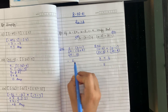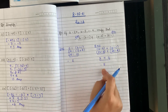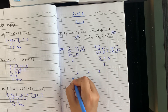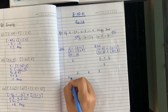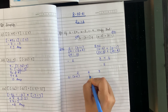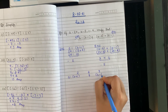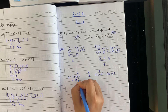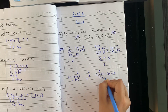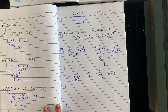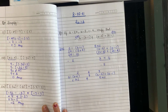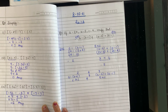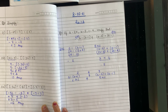LHS answer is 2 and RHS answer is 9. Both are unequal — 2 is not equal to 9. This means a ÷ (b + c) is not equal to a ÷ b + a ÷ c, i.e., LHS is not equal to RHS. Hence proved. Note it down everyone.